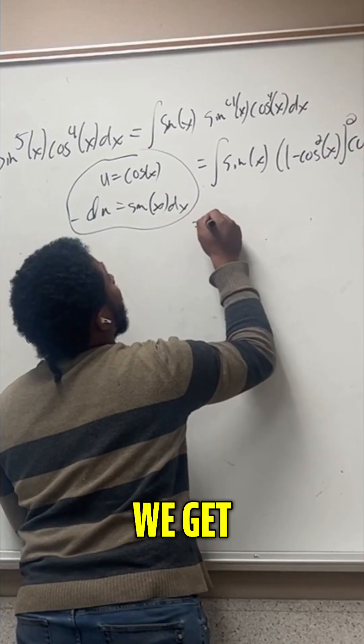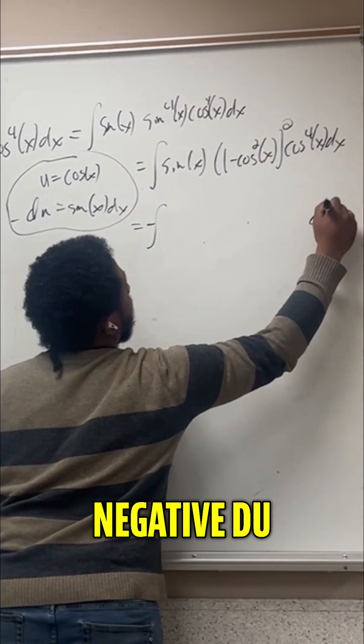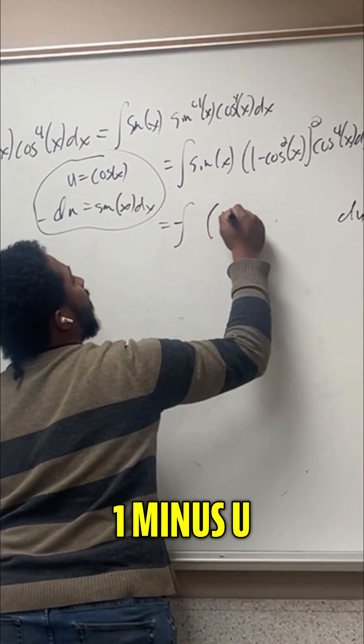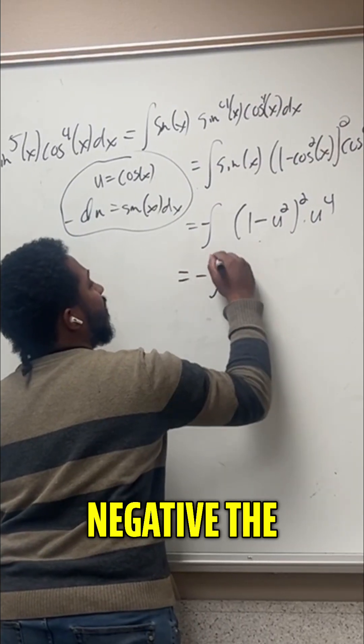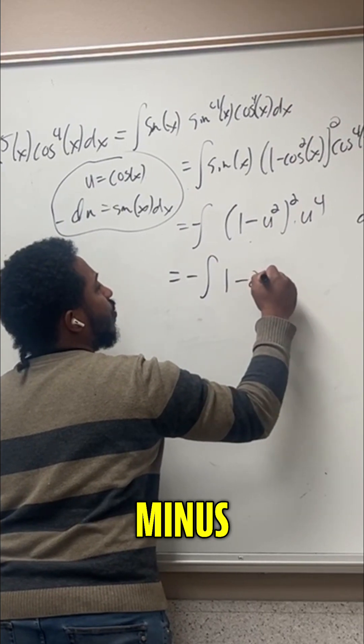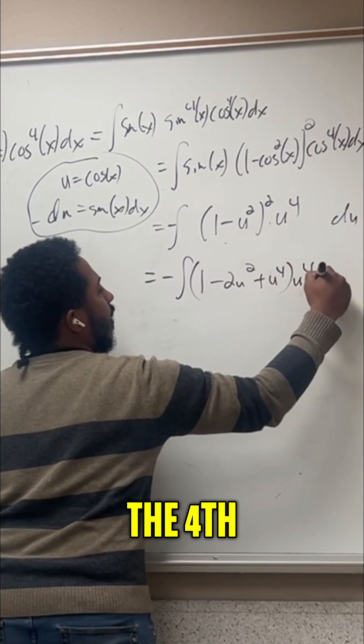Now I can directly substitute. Meaning now we get the integral of, remember, sine of x dx is going to be negative du. And then this becomes one minus u squared, squared times u to the fourth. So multiplying this out, we get negative the integral of one minus two u squared plus u to the fourth times u to the fourth du.